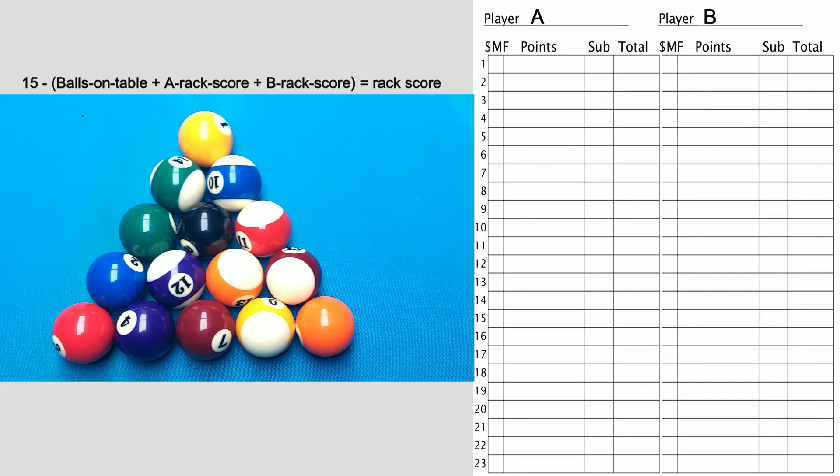You will follow a very simple procedure at the end of every player's inning and another at the end of every rack. The procedure at the end of every player's inning involves three steps. Step 1: Mark how the inning ended, either a safety, a miss, or a foul. Step 2: Add the balls remaining on the table to all balls pocketed so far this rack and subtract from 15 to get the player's rack score. Step 3: Enter the total score.